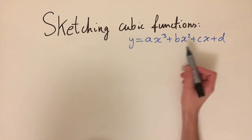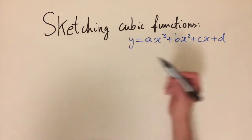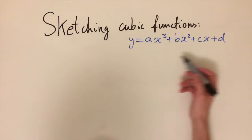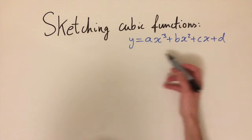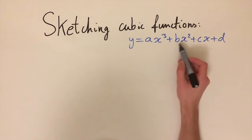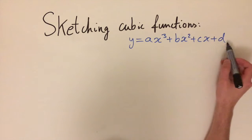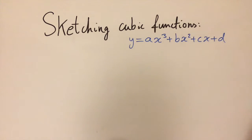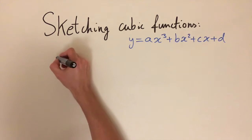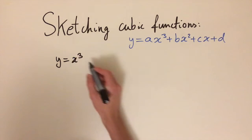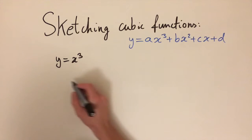In this video we'll be looking at sketching cubic functions. A cubic function has a general form of y equals ax cubed plus bx squared plus cx plus d, where a, b, c and d are some constants. The simplest cubic equation is just y equals x cubed, and this is a bit of a special case.